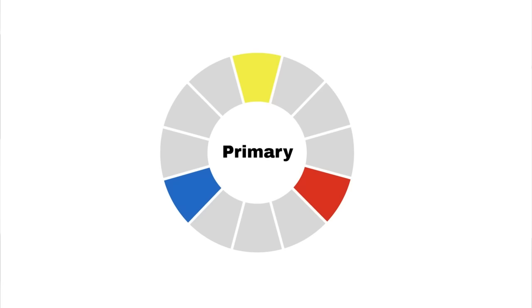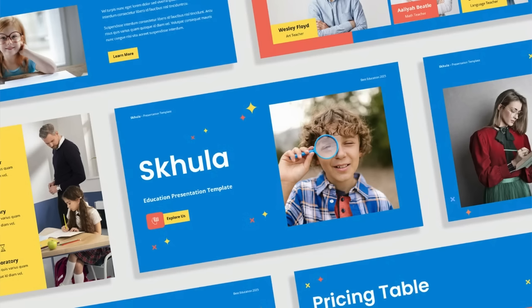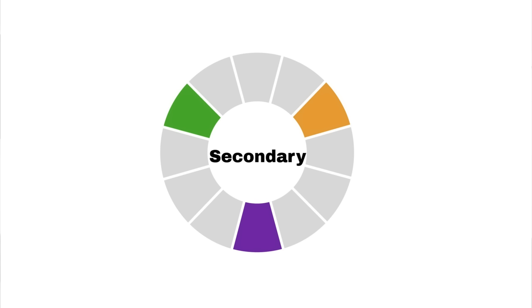You probably heard it in school: the color wheel consists of three primary colors — red, yellow, and blue. These three colors are very contrasting, and they can be used as a single color palette, like in this example.